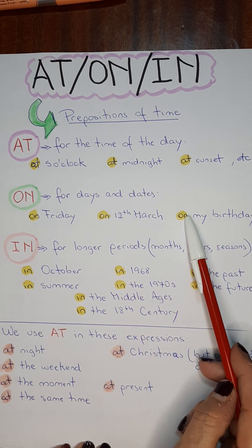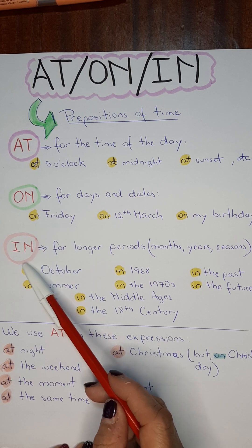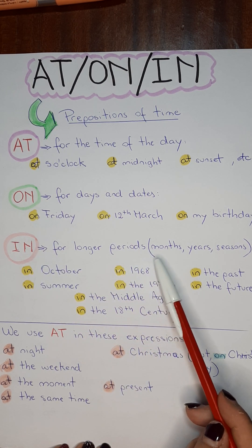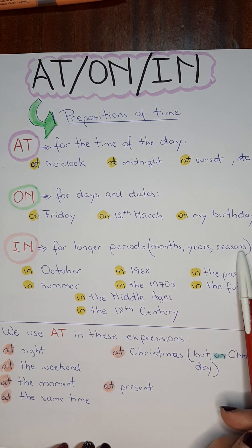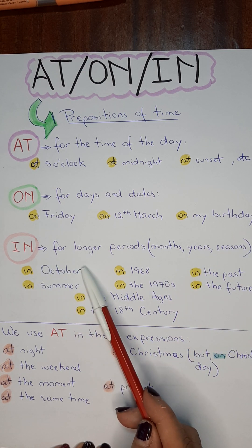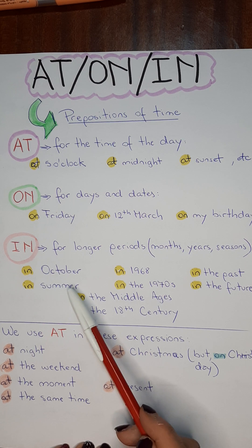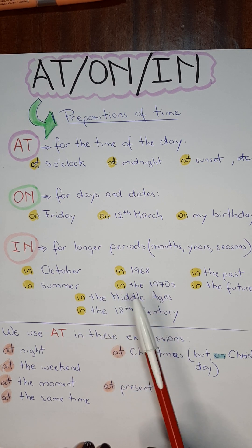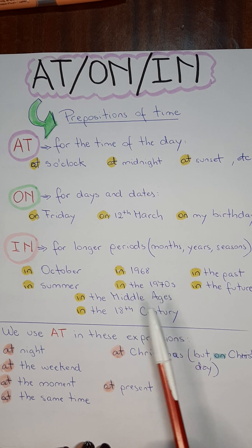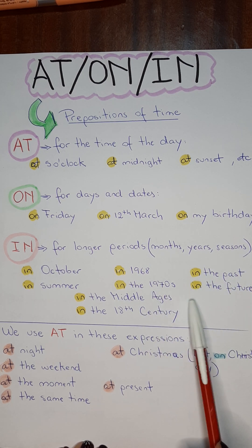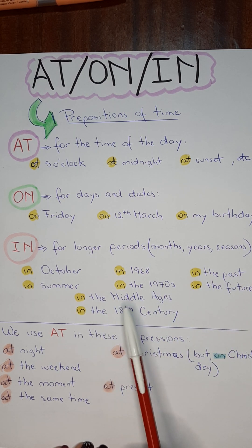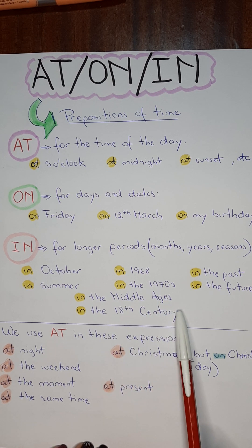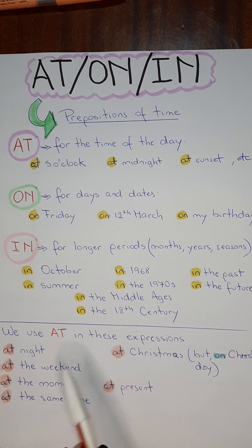On my birthday. We use in for longer periods, such as months, years, and seasons. For example: in October, in summer, in 1968, in the 70s, in the past, in the future, in the Middle Ages, in the 18th century.